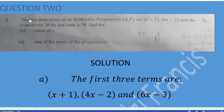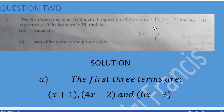This is CALL Mathematics 2018 major question 2. The first three terms of an AP are x+1, 4x-2, and 6x-3 respectively. If the last term is 18, find the value of x and also the sum of the terms of the progression. These terms contain variables in x, so we need to look at them carefully and reason carefully before we can answer this question.